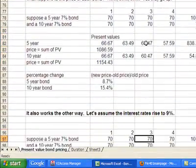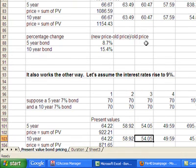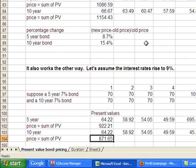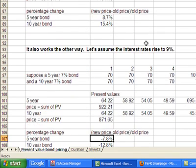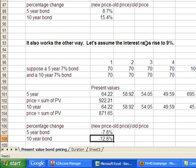This works in reverse as well. If interest rates go up, bond prices drop. For example, interest rates go up by 2% from the original 7% to 9%. Now the price of the bond is going to drop to $922 for the 5-year bond and $871 for the 10-year bond. Notice the percentage change: 7.8% down for the 5-year, 12.8% for the 10-year bond.